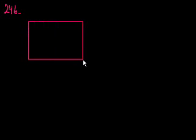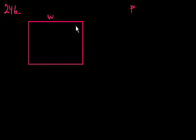Problem 246. Let me do it in magenta. A rectangular circuit board is to have width w inches. Let me draw it. So let's say it has width w inches, perimeter of p inches, so let me just put that at the side right here.